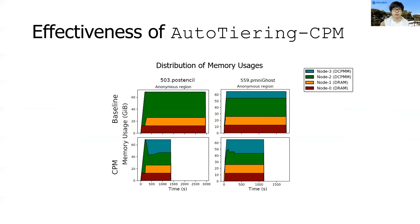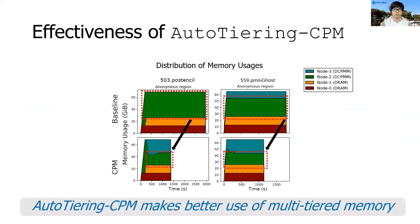Let's look at the distribution of memory usage across nodes. The top graph indicates baseline Linux and the bottom graph indicates auto-tiering CPM. We can see that the usage of lower-tier memory nodes, DCPMM node 2 and node 3, are balanced by auto-tiering CPM. By satisfying page locality in the lower-tier memory nodes, we can improve performance.